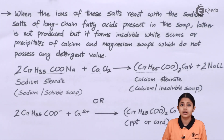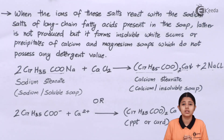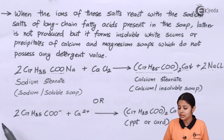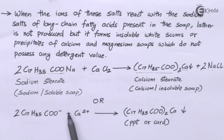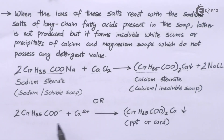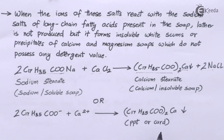Now the same reaction shown in ionic form. Na and Cl do not play a major role since NaCl is a highly soluble salt. The main ions taking part are 2(C₁₇H₃₅COO⁻) — the negatively charged stearate ion taken twice — plus Ca²⁺. The two positive charges on Ca²⁺ attract the two negative stearate ions, forming (C₁₇H₃₅COO)₂Ca — the insoluble precipitate also known as curd or scum.